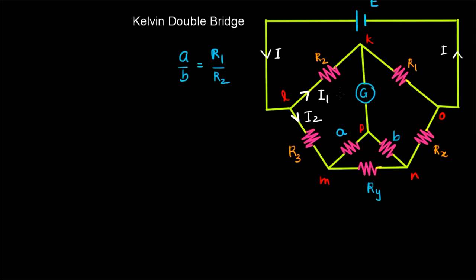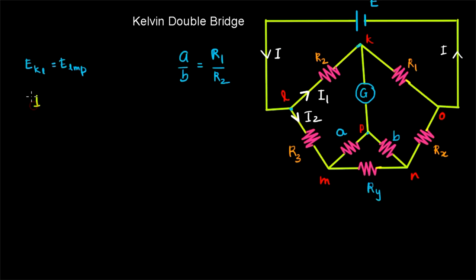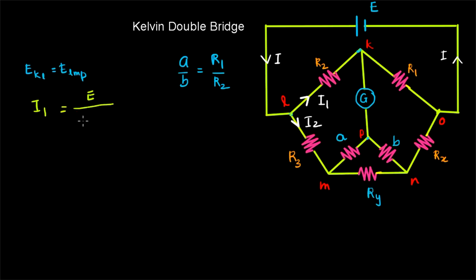When the bridge is balanced, there will be no current flow through the galvanometer. In that case, we can see that the potential between points K and L, and the potential along path LMP, will be equal. In this analysis, we are going to show that E_KL is equal to E_LMP. By equating these two equations we can find the balance equation of the bridge. We can find I1, which is the current flowing through the path LKO, as E divided by R1 plus R2. Let us call this equation number 1.